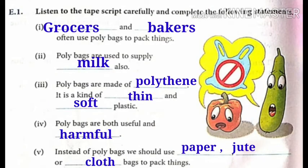Listen to the tape script carefully and complete the following statements — fill in the blanks. First: dash and dash often use poly bags to pack things — grocers and bakers. Second: poly bags are used to supply dash also — milk. Number three: poly bags are made of dash — polythene. It is a kind of dash and dash plastic — thin and soft plastic.